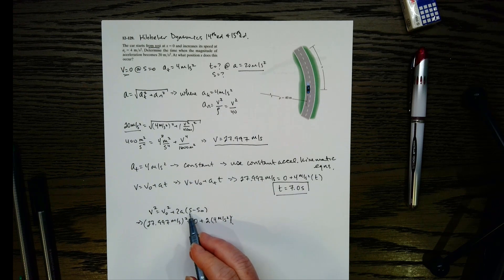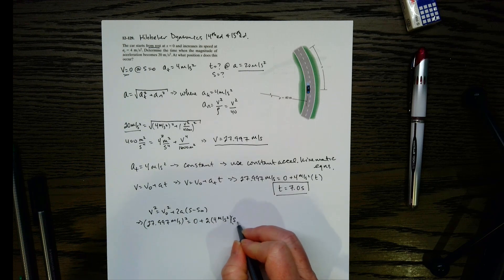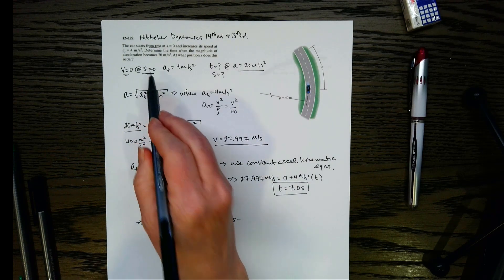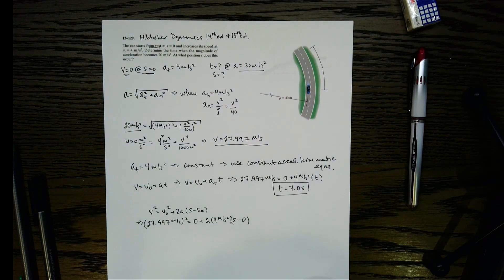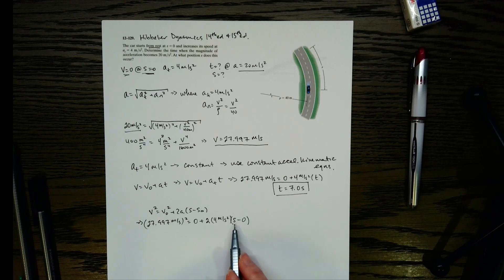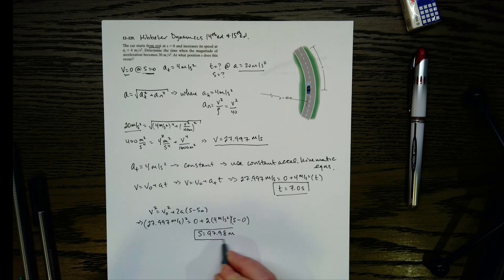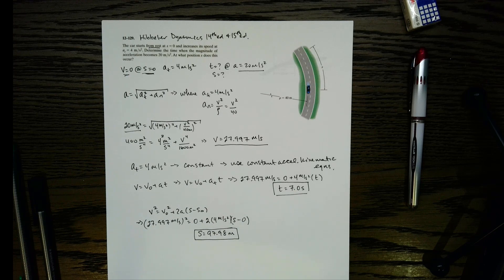And then we need our change in displacement. s is the final displacement, that's what I want. The initial displacement was where we started, so that is going to be 0 because it told us right here. So we've got 0 there. Now we can solve for s, our final displacement. So we've got 97.98 meters. And that's how you go about getting your final displacement.